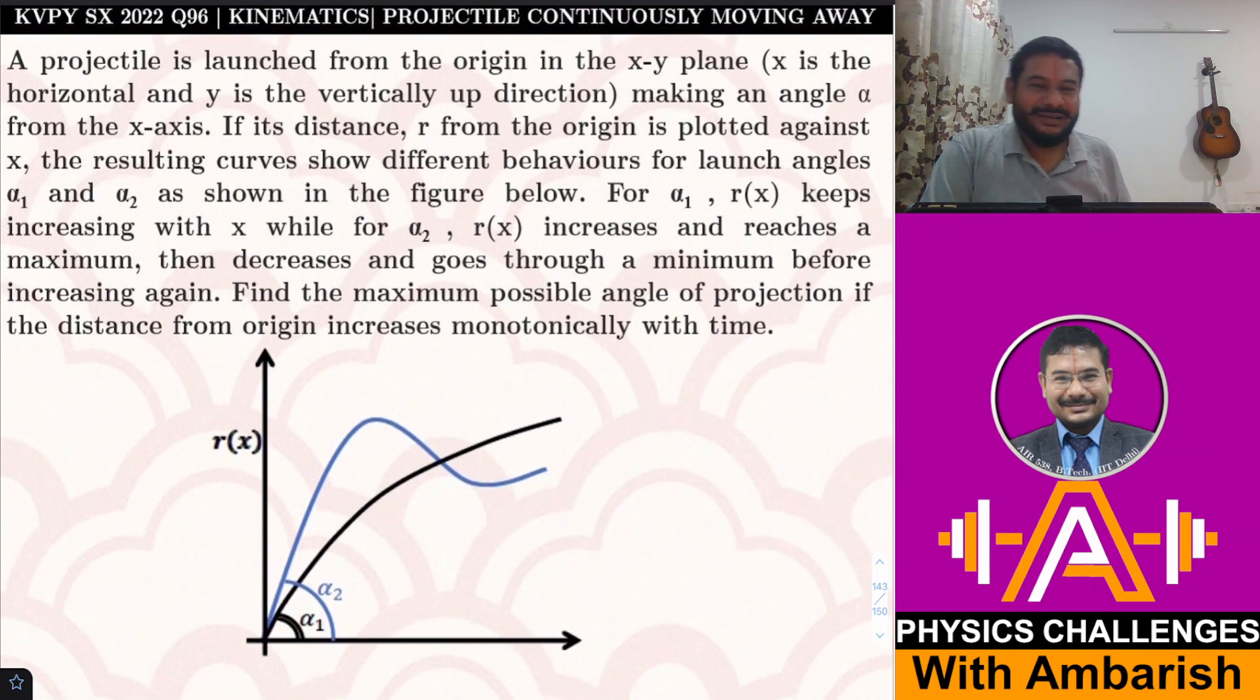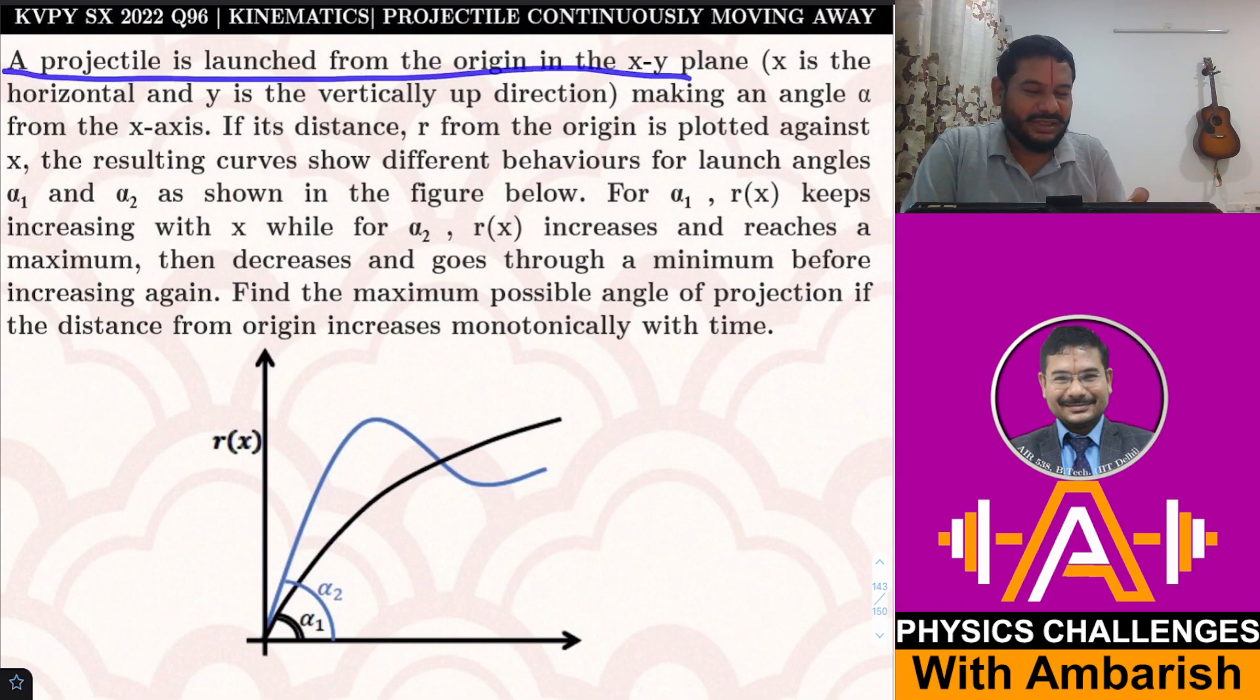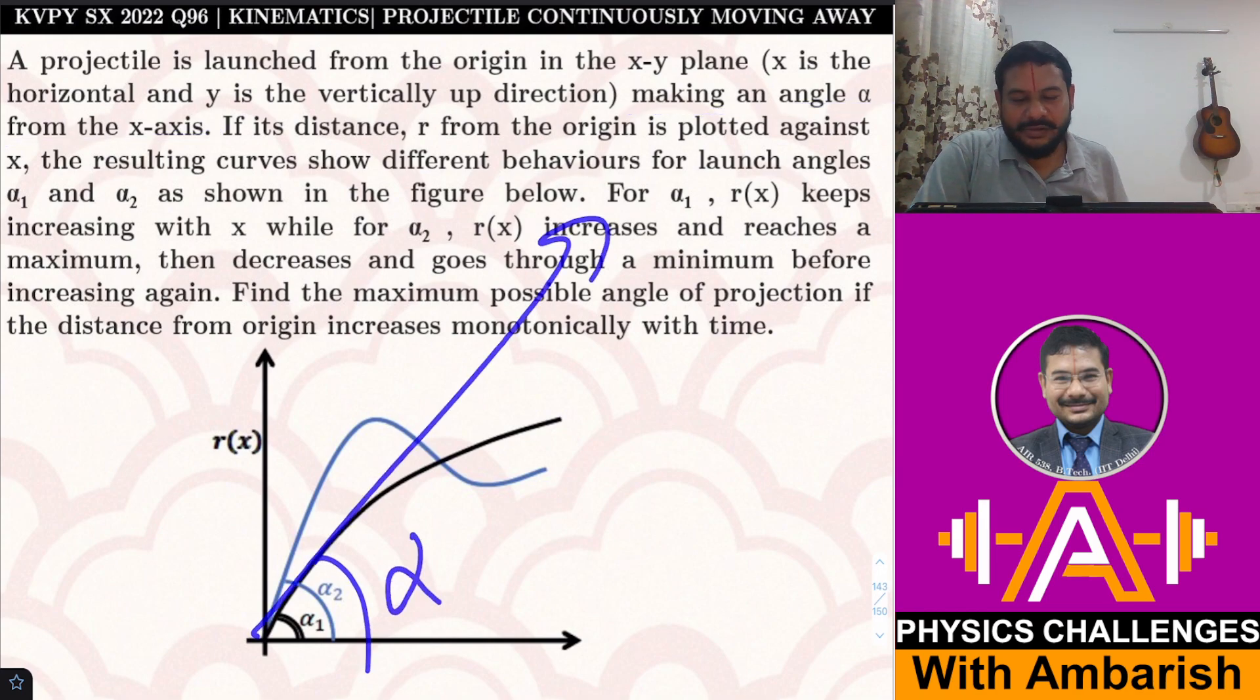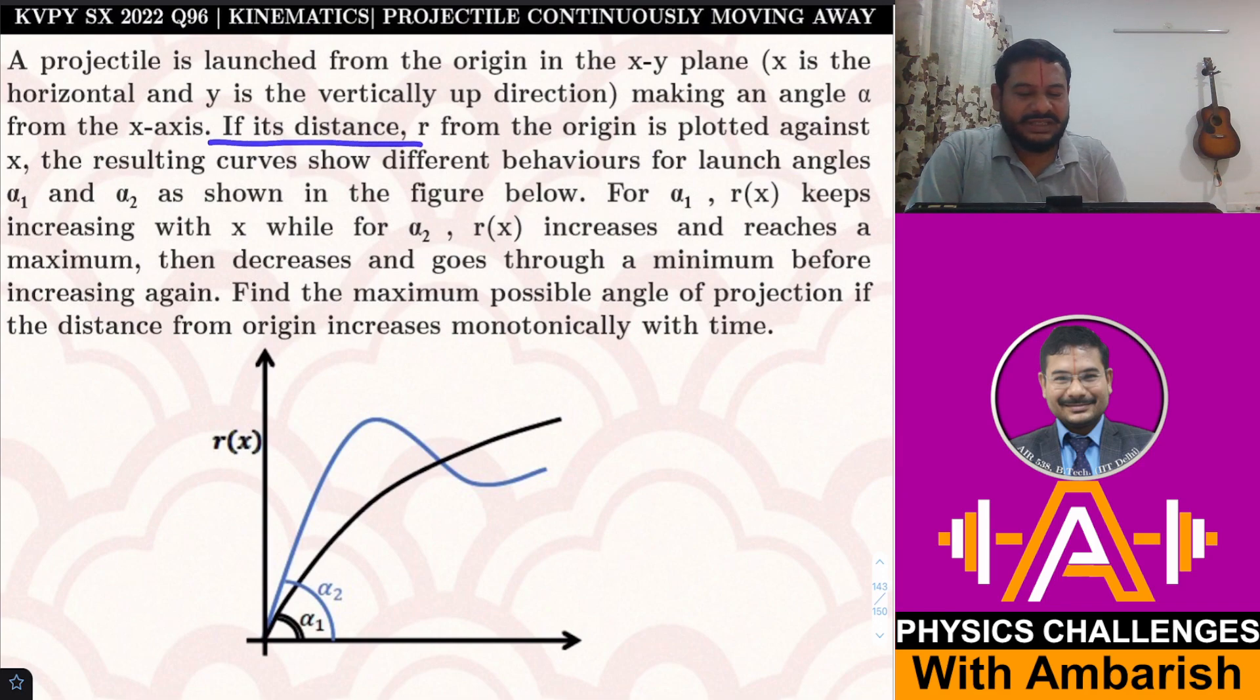Let me read it out for you. A projectile is launched from origin in the xy plane, where x is the horizontal and y is the vertically up direction, making an angle α from the x-axis. If its distance r from the origin is plotted against x, the resulting curves show different behaviors for launch angles.